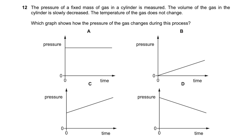A fixed mass of gas in a cylinder has its volume slowly decreased at constant temperature. Which graph shows how pressure changes? Option A (constant pressure) and D (decreasing pressure) are wrong. Option B is wrong because initial pressure cannot be zero. By Boyle's Law, decreasing volume at constant temperature increases pressure, so option C (increasing pressure curve) is correct.